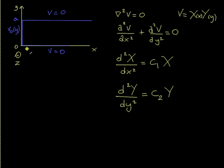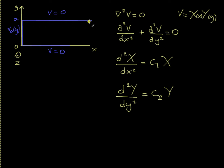The system that I have here — I have drawn only the x, y axis. The system is three-dimensional. I have a plate, a 2D plate on the xz plane that has a potential of zero. I have another plate on the x equals a and z plane, and this plate also has a potential of zero. And I have another plate on the yz plane that has a potential of V0, and it is a function of y.